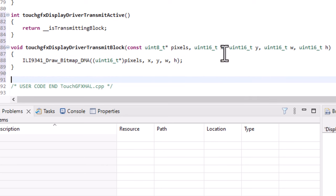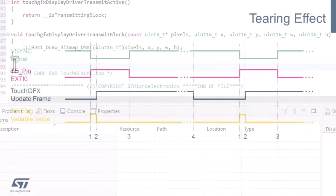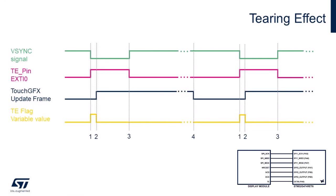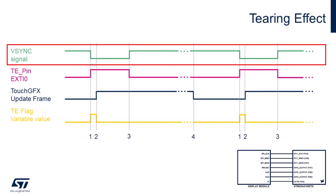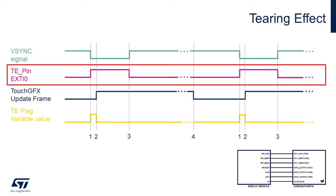Before we continue to the last function, I will present a brief explanation on how the tearing effect is working in this application. This is the timing diagram for the tearing effect signal. Note that depending on the display controller you are using, the method for managing the VSync pulse may differ. First, we have the internal display VSync signal, which is externalized through the tearing effect pin, which is connected to the MCU EXTI line 0.